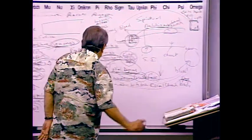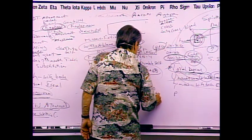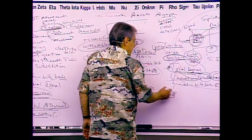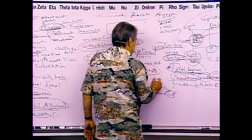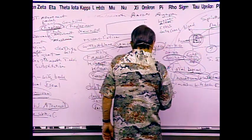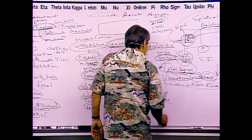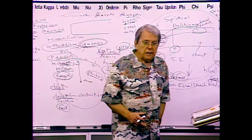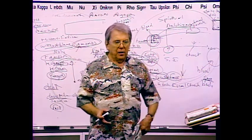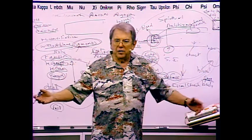So the rabbis dropped the term 'God' and inserted the word 'heaven.' Kingdom of God and kingdom of heaven are one and the same thing. When you look in Mark, Luke, and John they usually use 'kingdom of God.' Matthew used 'kingdom of heaven' because he was writing to Jewish converts. 'Blessed are the poor in spirit, theirs is the kingdom of heaven' in Matthew 5, while Luke uses 'kingdom of God.' Kingdom of God means God was their king.